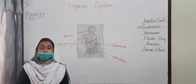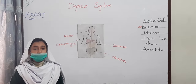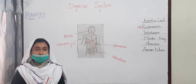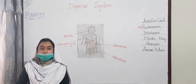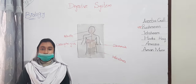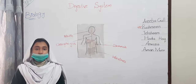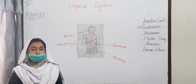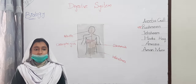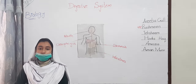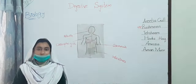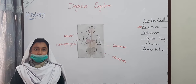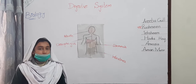Mouth. The process of digestion begins from our mouth. Our teeth break the food into small pieces. Then our tongue mixes the food with saliva to make it soft and moist. Our mouth also digests carbohydrates.